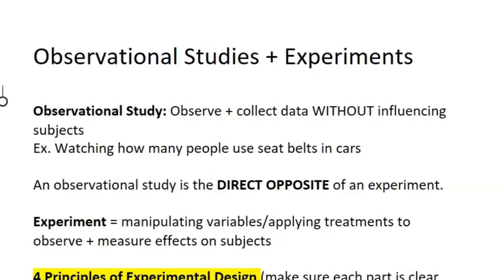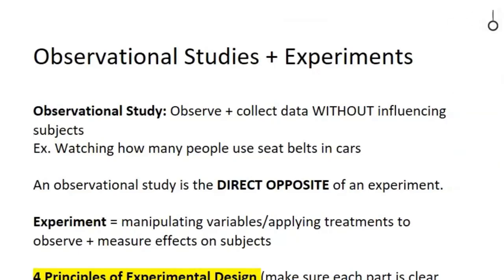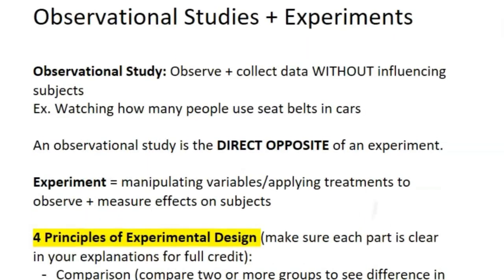Now let's talk about observational studies and experiments. An observational study is different from an experiment because in an observational study you only observe and collect data without influencing the subjects. For example, sitting in your car and watching how many other people use seat belts — you can't do anything about them, you're just observing variables of interest.